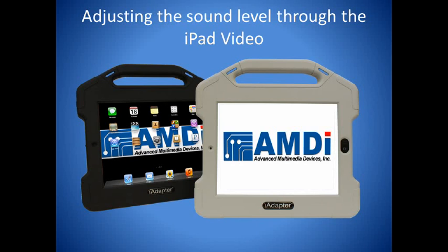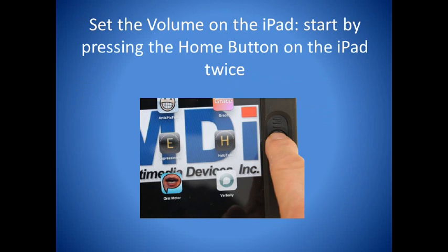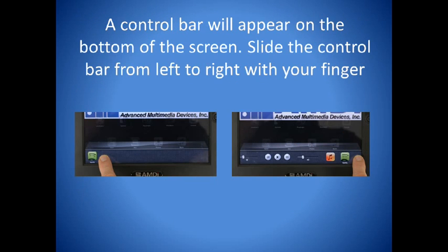This video will show you how to adjust the sound level through the iPad. To set the volume on the iPad, start by pressing the home button twice. A control bar will appear on the bottom of the screen. Slide the control bar from left to right with your finger.